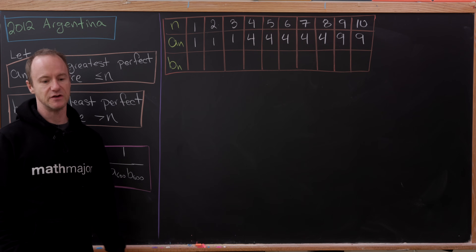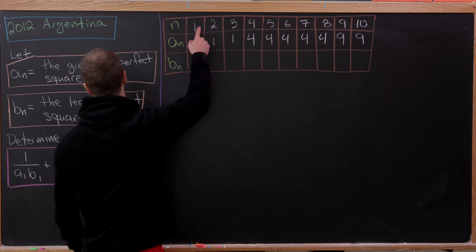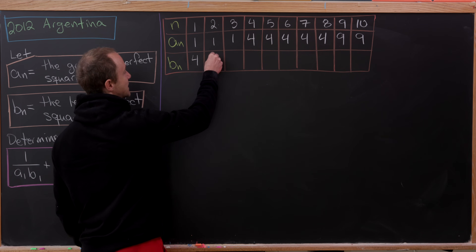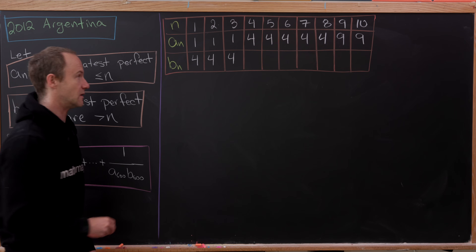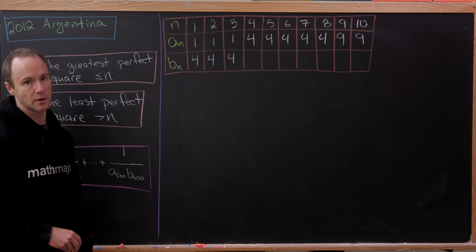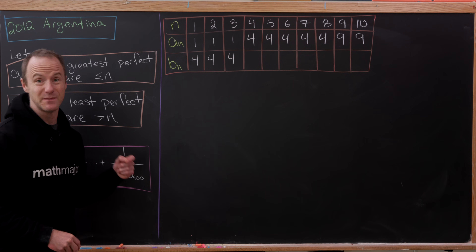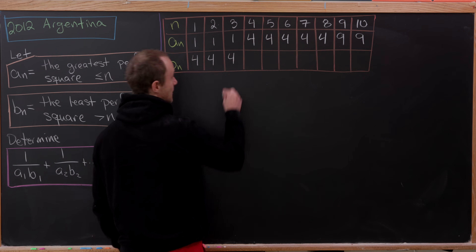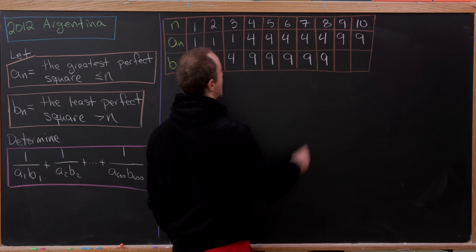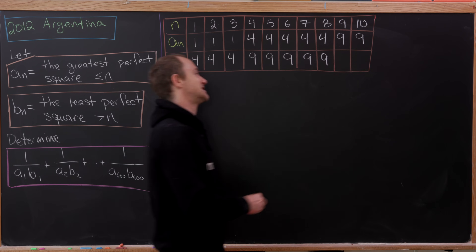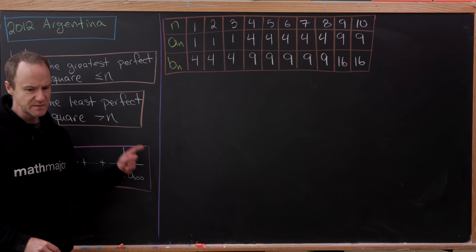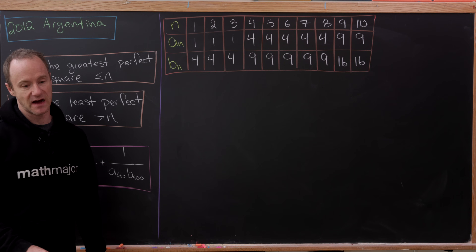Now let's look at the values of b_n. b_1 will be the least perfect square bigger than 1, so that'll be 4. b_2 and b_3 are also 4, since the first perfect square after each of those numbers is 4. But b_4 is 9, because we have a strict greater-than. So we have 9 repeated for n = 4 through 8. After that we have 16, and then 5 more copies of 16.